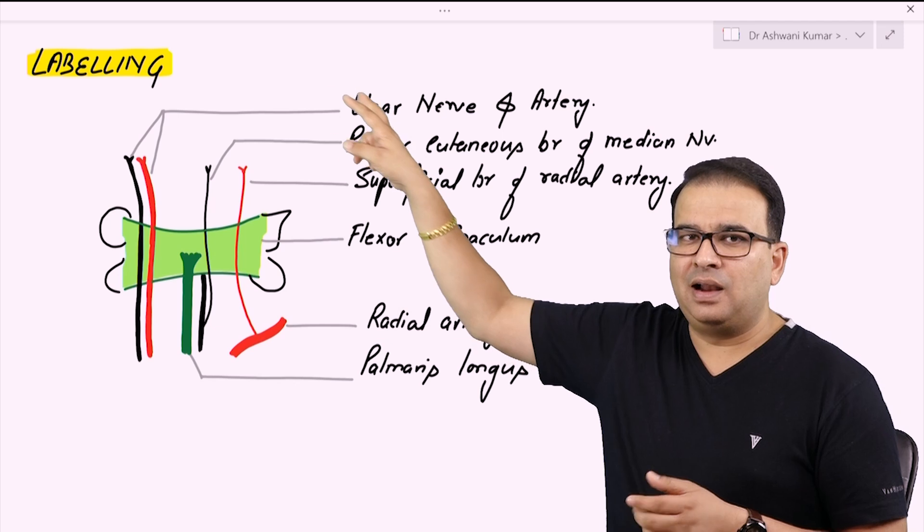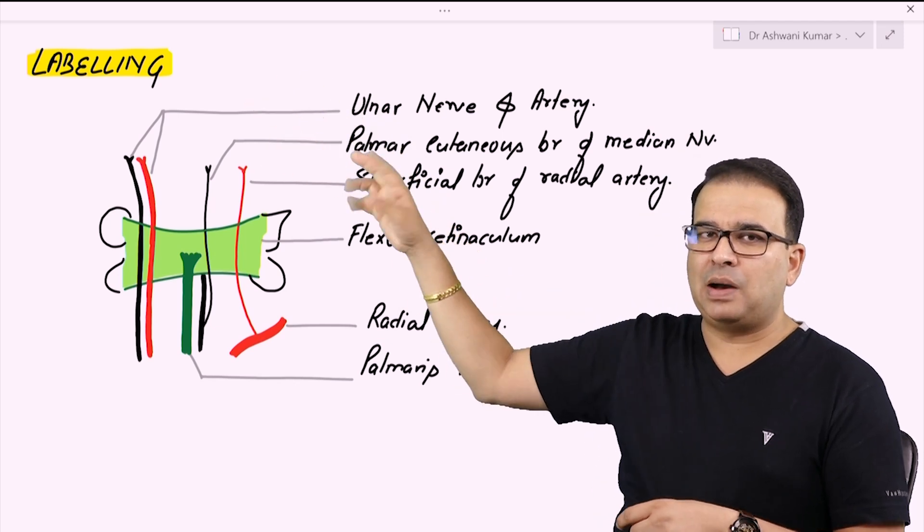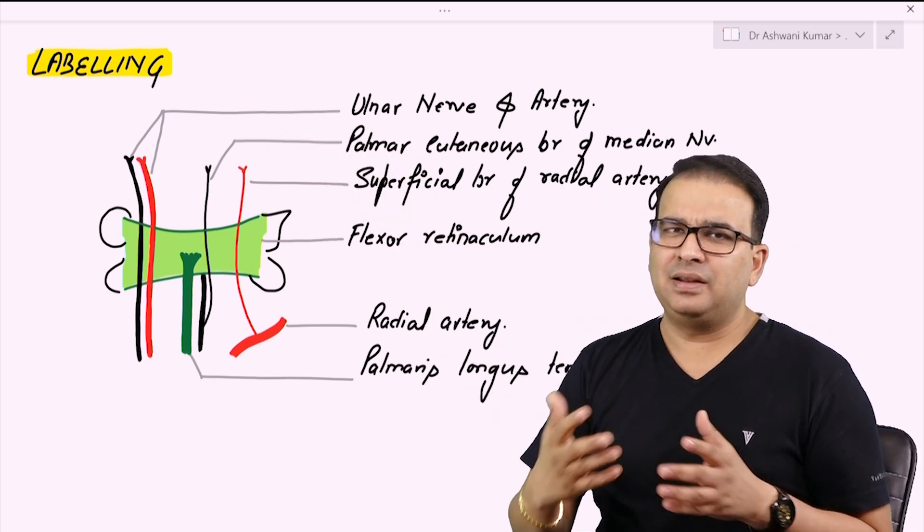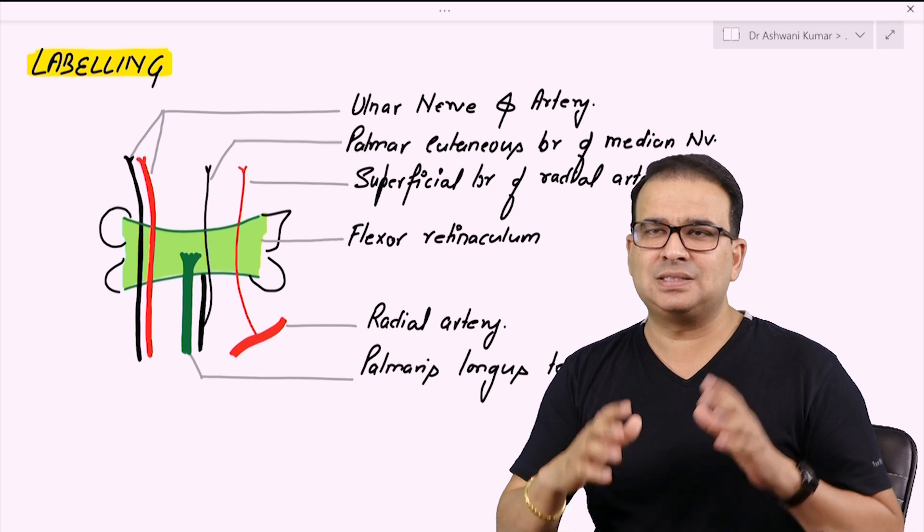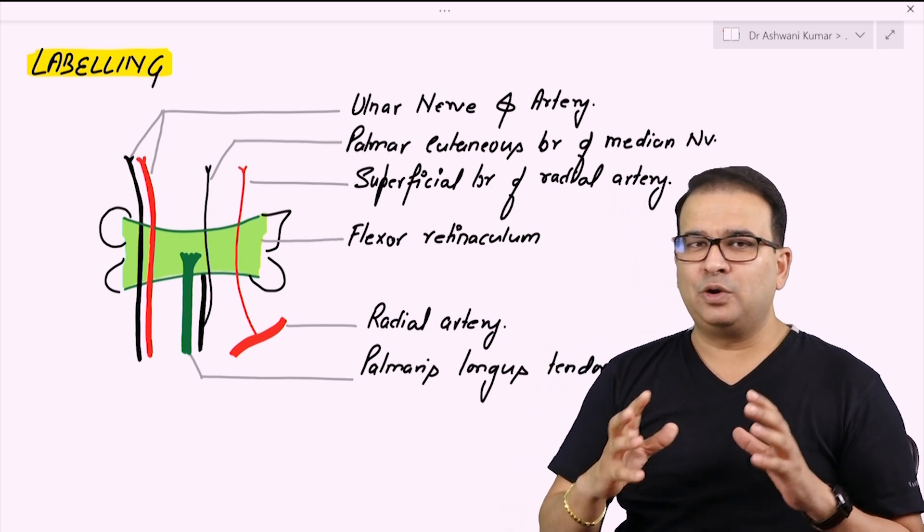Try to keep your labeling aligned also. If you write ulnar arterial nerve here, and if I write the palmer ketones more on this side, this will not look more impressive. This is all about creating a good impression of the diagram.